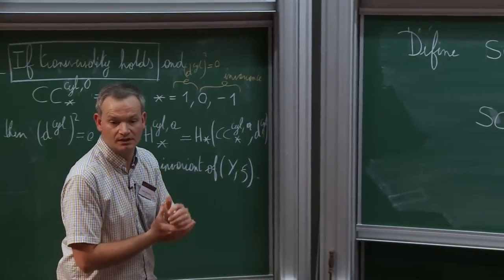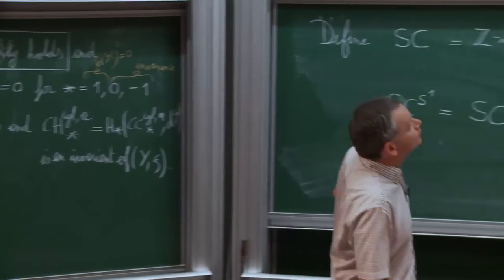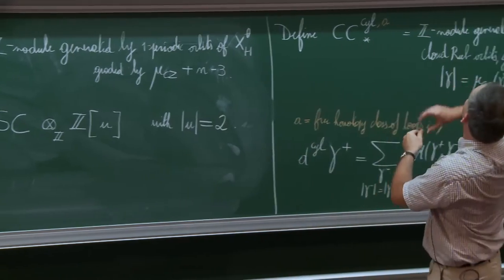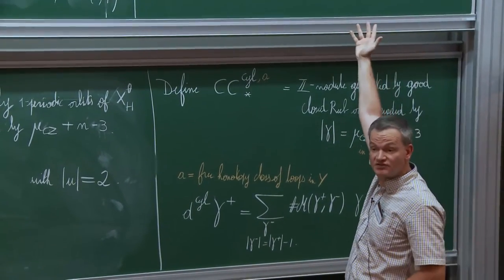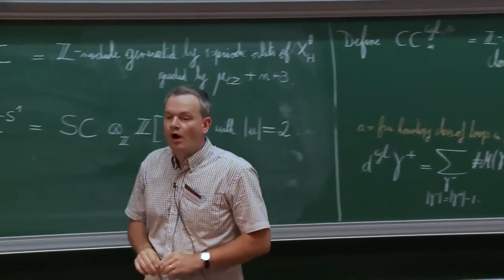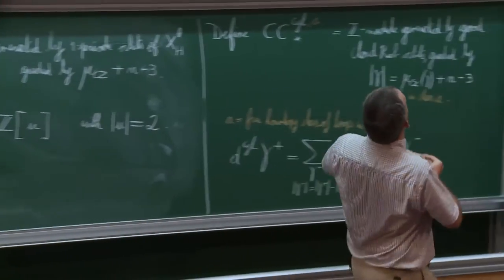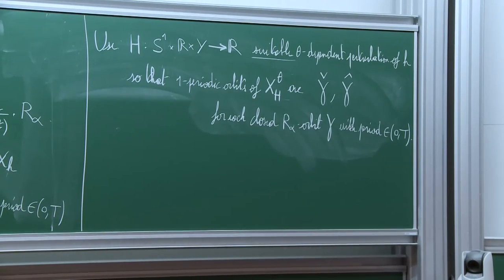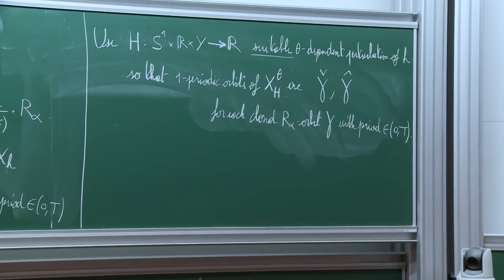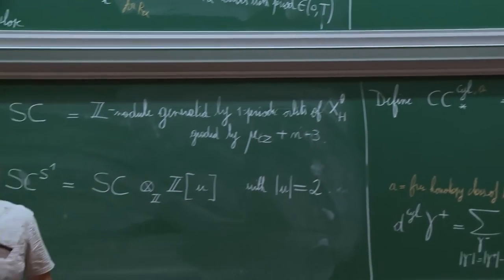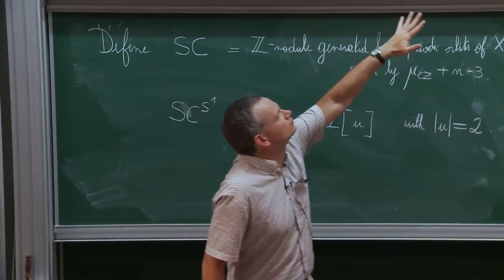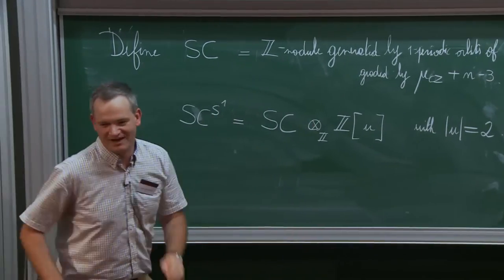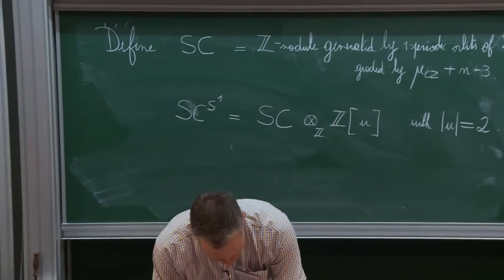When I say generated by one-periodic orbits, this includes both γ̌ and γ̂ for all possible γ. The check γ̌ is like an arrow going down—index one less—and hat γ̂ is like an arrow going up—index one more. The indices differ by one, the Morse index on the circle. I won't use the check and hat notation anymore since I don't really need to.